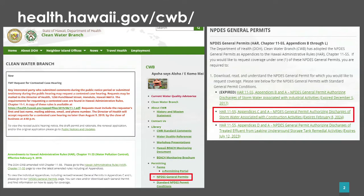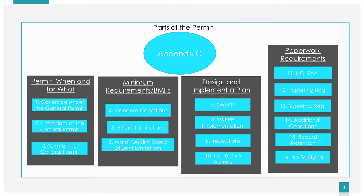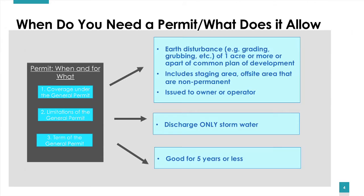There are essentially 16 sections within Appendix C, but for this presentation I broke it into four main categories: first, coverage under your permit; second, your minimum requirements; third, planning and implementation; and last, everyone's favorite — paperwork. One major change from the old Appendix C to the new one has to do with your receiving water. Under the old Appendix C, you could only get general permit coverage if your discharge went to a Class 2 inland or a Class A marine receiving water. Higher classified receiving waters required you to get an individual permit.